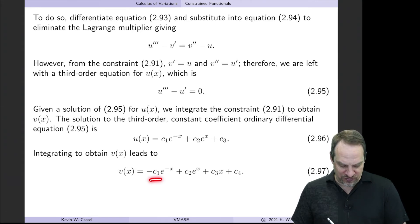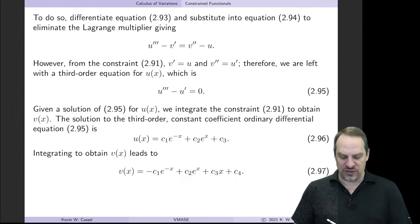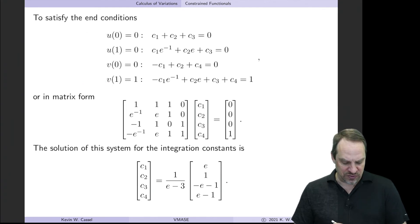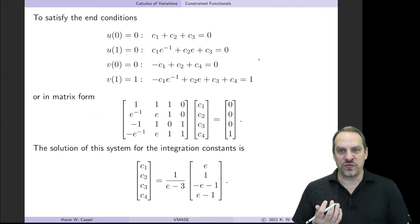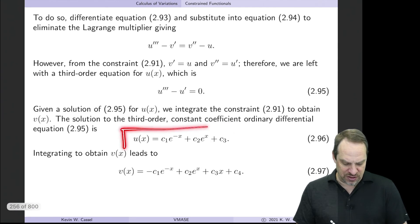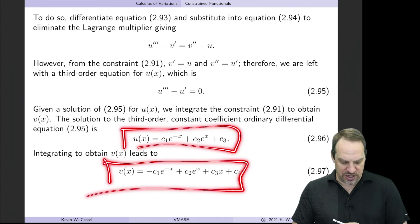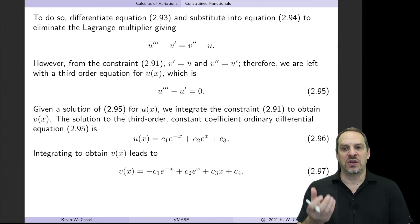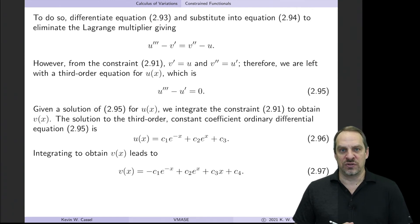We have four constants c1, c2, c3, c4. We have four boundary conditions — all specified. We apply the four boundary conditions and get a four-by-four matrix problem to solve for those constants of integration. Plugging those back in gives us u of x and v of x, the stationary functions of this functional subject to the differential constraint.